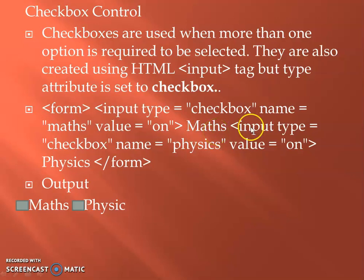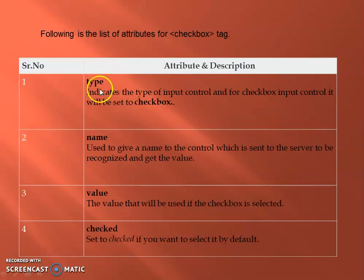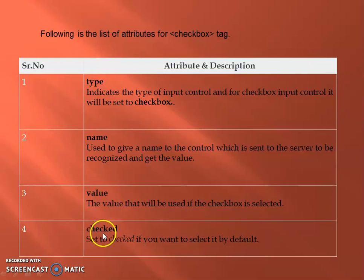The first subject is Maths. Input type equal to checkbox, name equal to physics, physics value equal to 1. The value is displayed. The form tag is closed and the output is displayed. The attributes of the checkbox: type is input type equal to checkbox, the attribute is named to identify the checkbox. The value of the checkbox is selected — if you check the checkbox, you will choose physics or maths. The attribute value and the attribute checked are used.